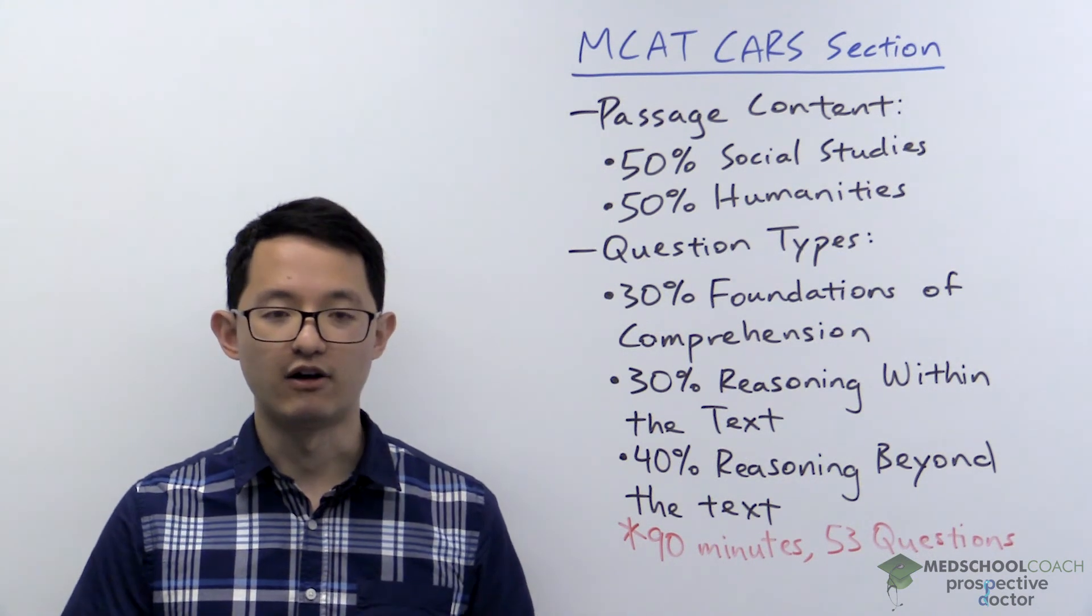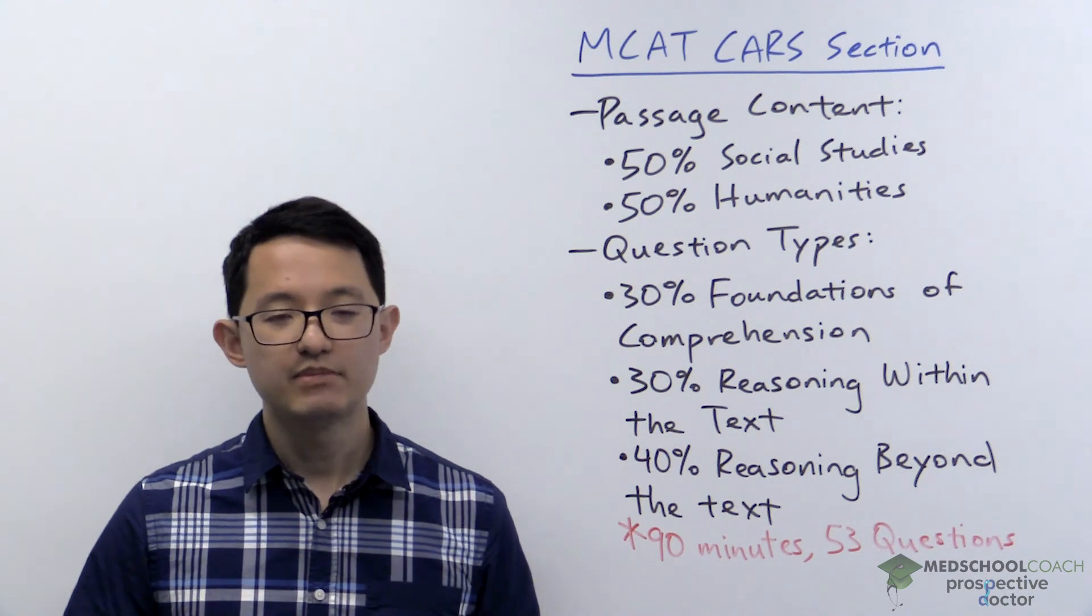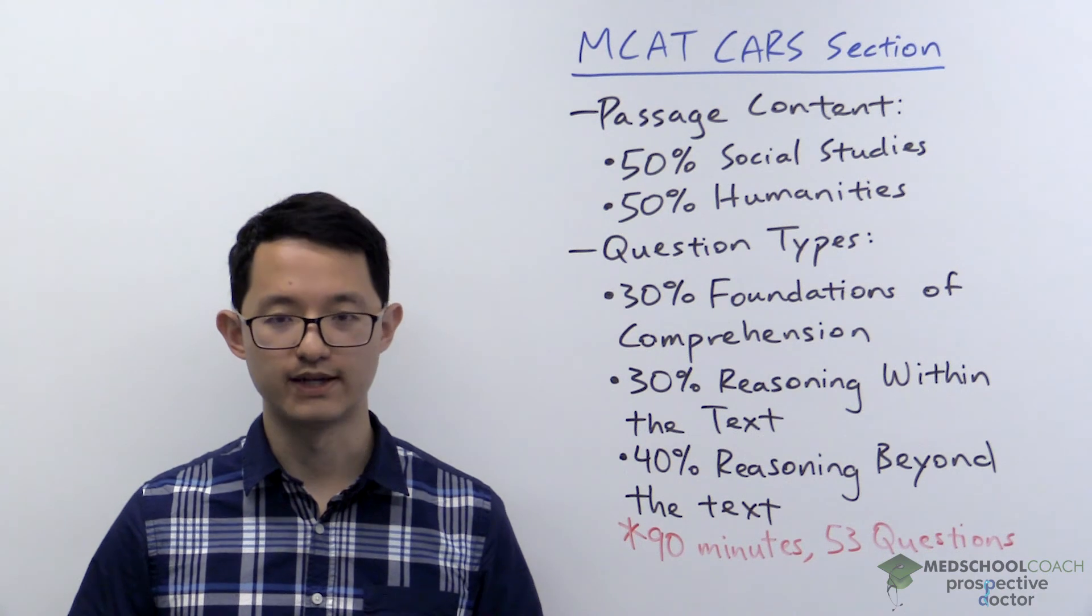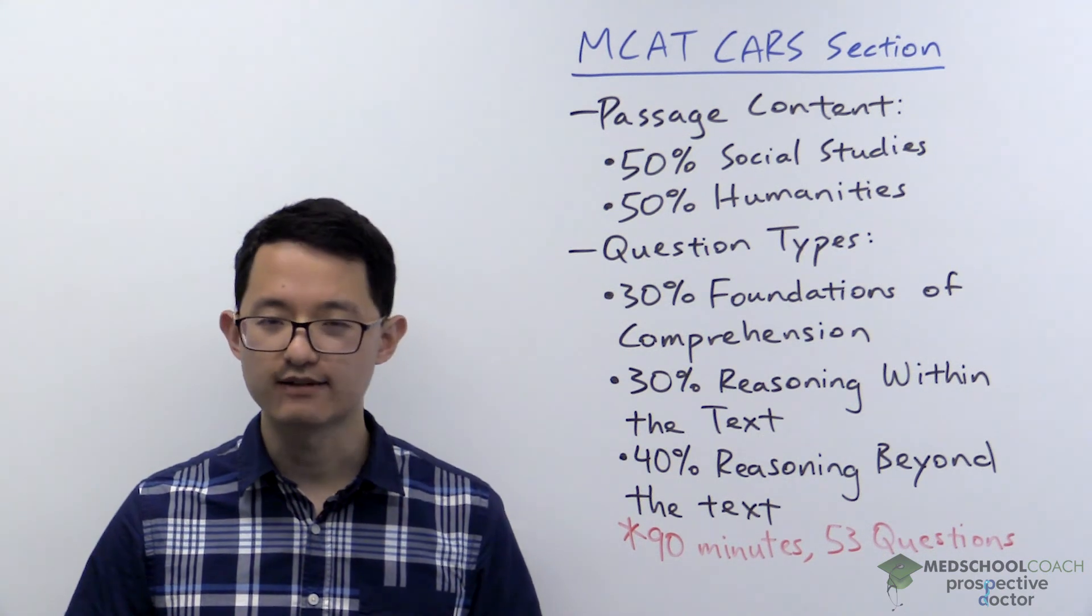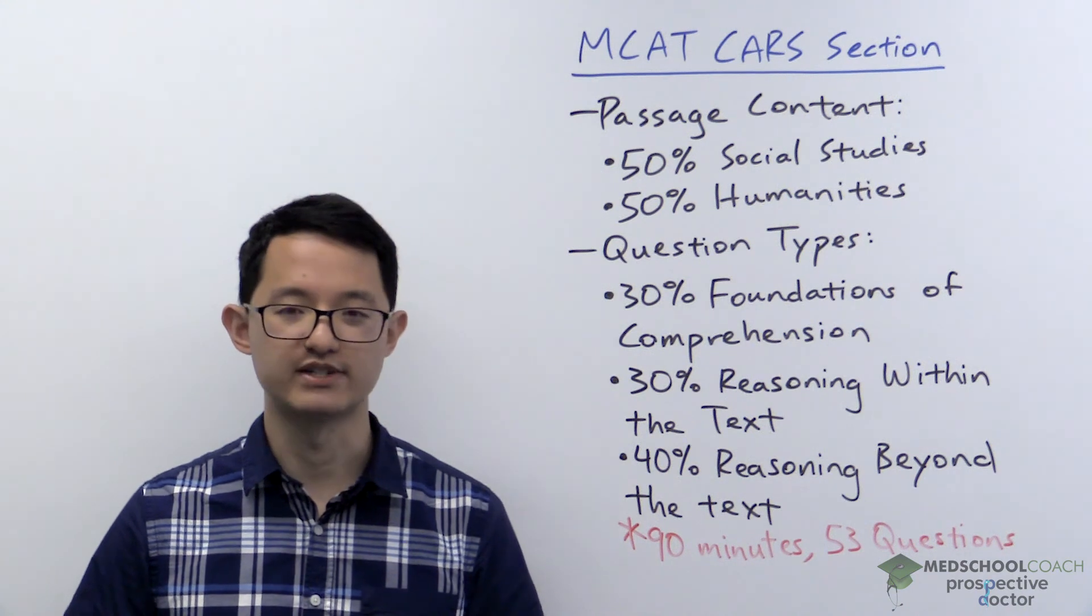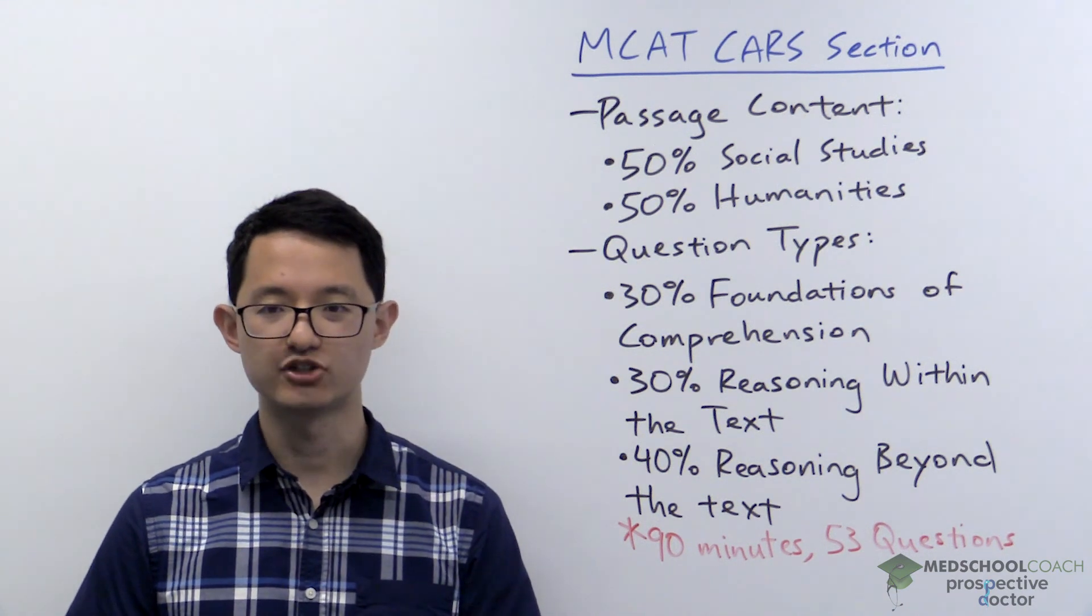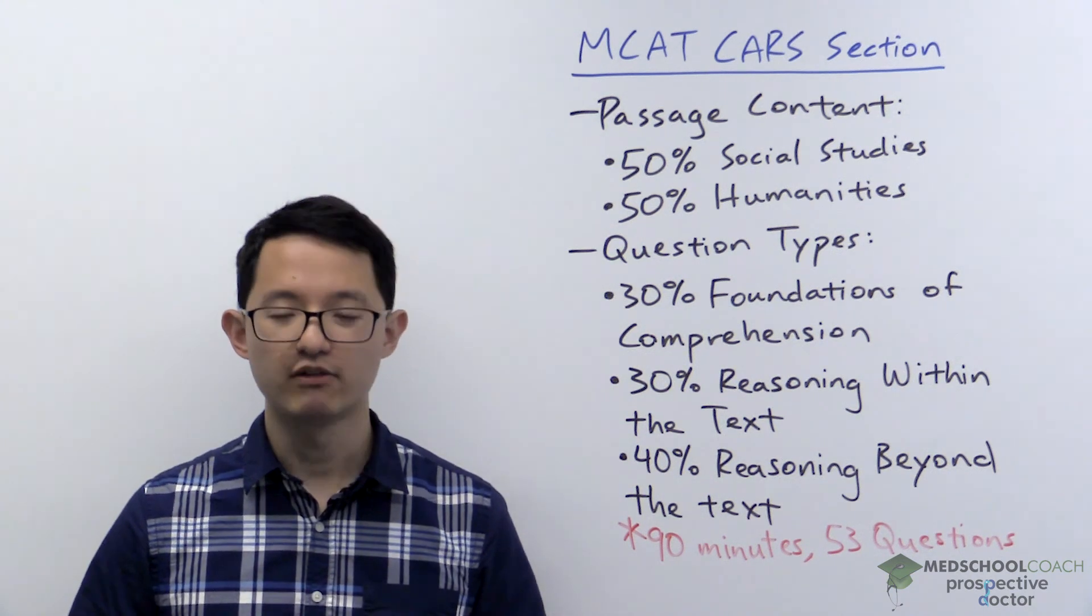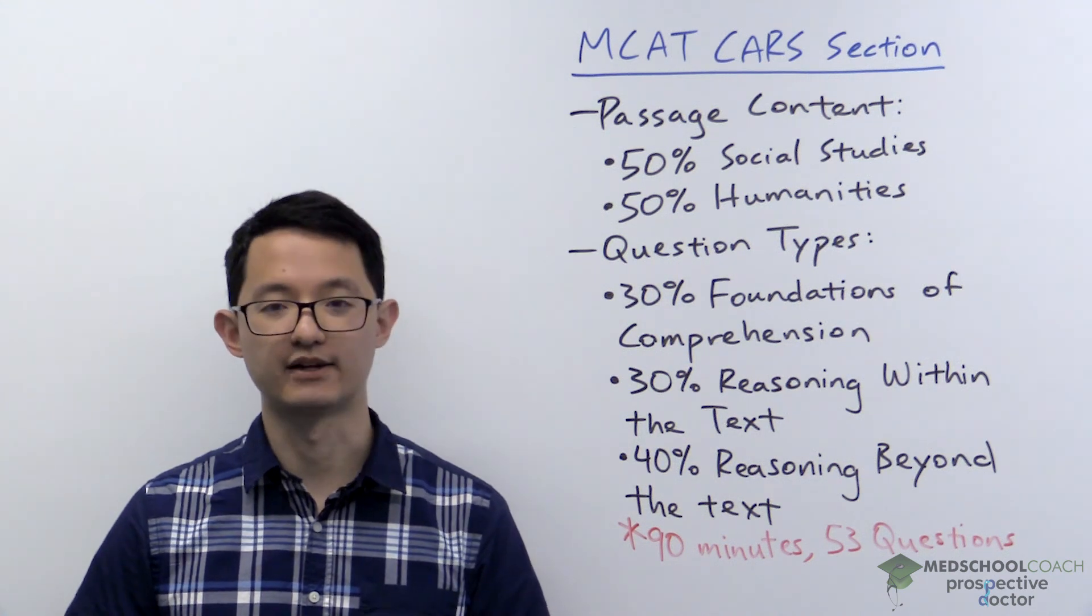That means there are general outlines for question stems, and there are the same types of trap answer choices that show up over and over again. So when you're doing CARS practice questions, really try to analyze the question stems and the answer choices very carefully. Try to understand what makes a good answer choice and what makes a bad answer choice. And the earlier you can figure that out, the better it will be for improving your MCAT CARS score.